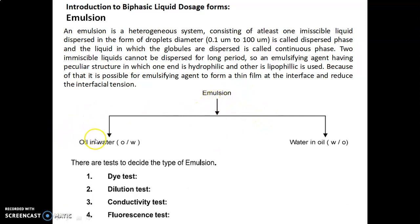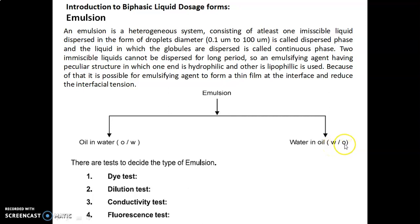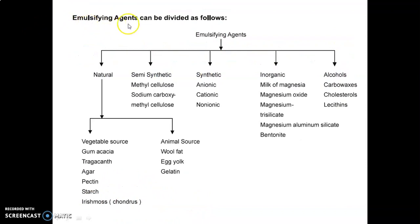The simple classification of emulsion is oil-in-water (O/W) type and water-in-oil (W/O) type. In the O/W type, oil is the internal phase while water acts as the external phase. In the W/O type, water is the internal phase while oil is the external phase. There are four tests to decide the type of emulsion: the dye test, dilution test, conductivity test, and fluorescence test.